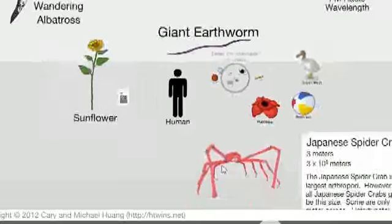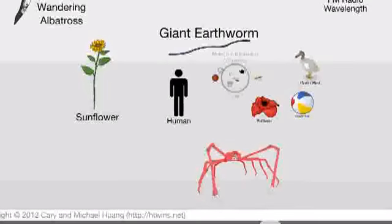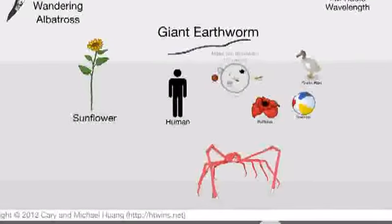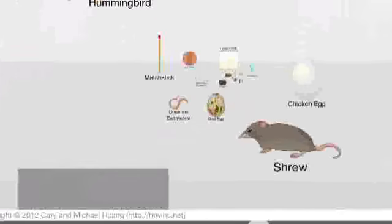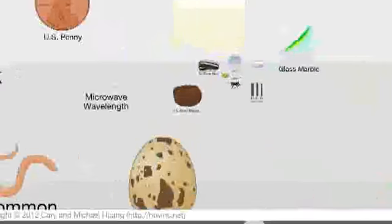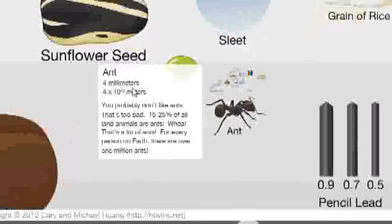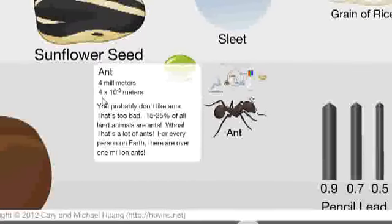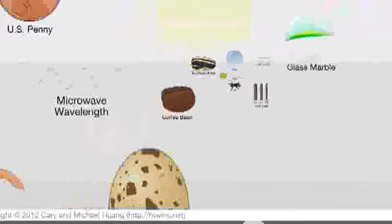The good thing about this program is that you can zoom in or out, and it tells you the scale. You can zoom in to see the length of an ant — if you click on an ant, it tells you the average ant is 4.1 times 10 to the power of minus 3. I will zoom in more in the next video.